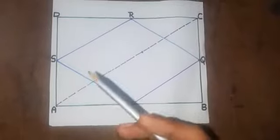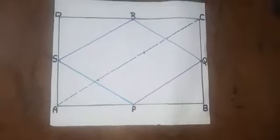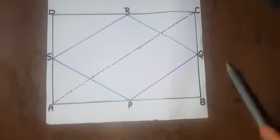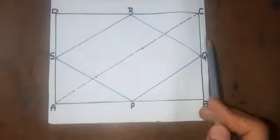Now let's take other two triangles SDR and RCQ. Similar to SAP and QBP we get that SR is equal to RQ.